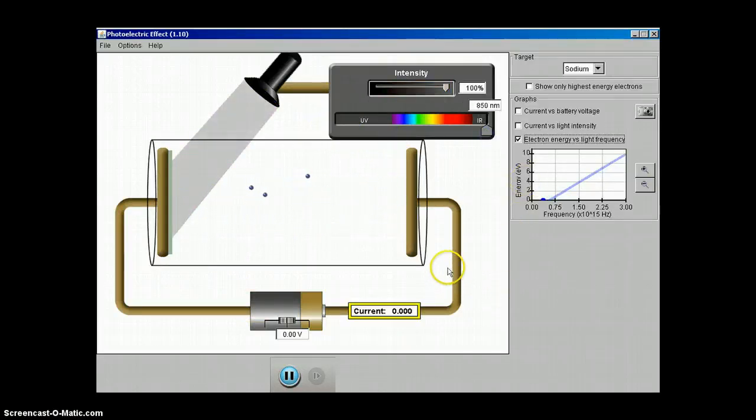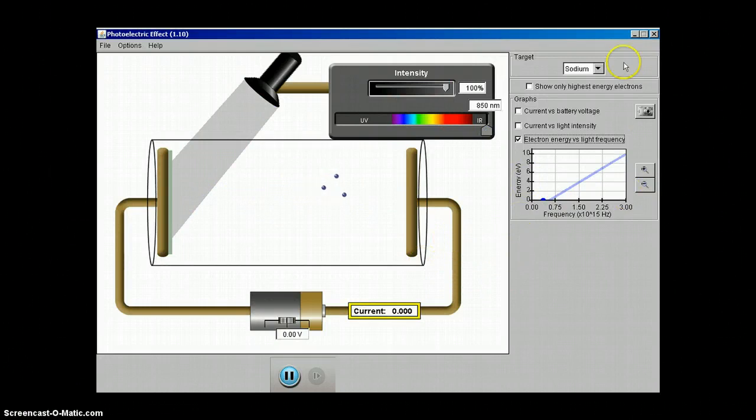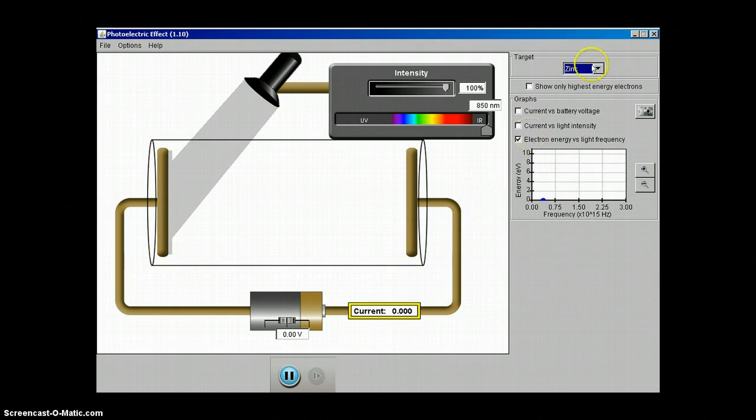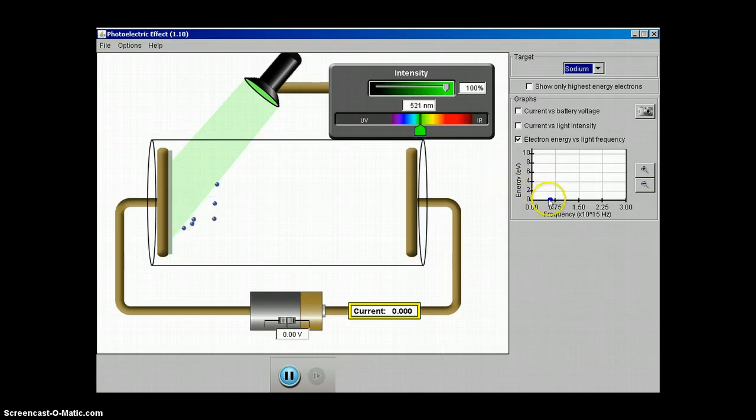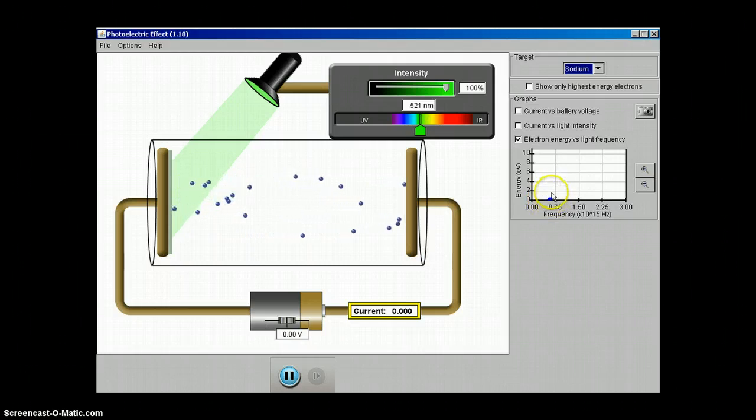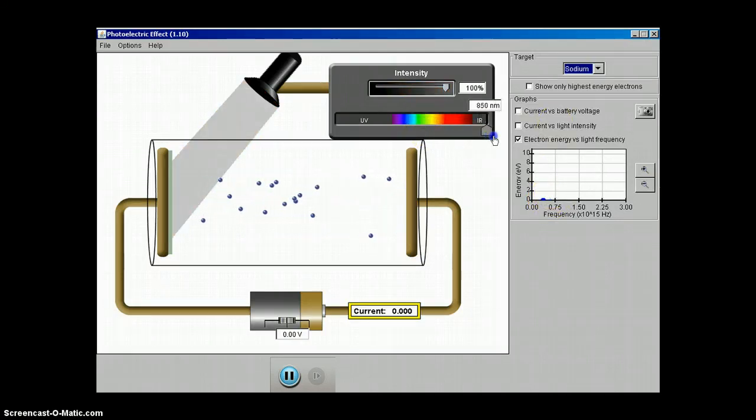What we'd like to do now is experiment with a different metal. Go up here to the drop down menu and change this to zinc. Back at sodium, what was the frequency right in there? This is the frequency at which photoelectrons just start for sodium. Let's see if it varies for zinc.